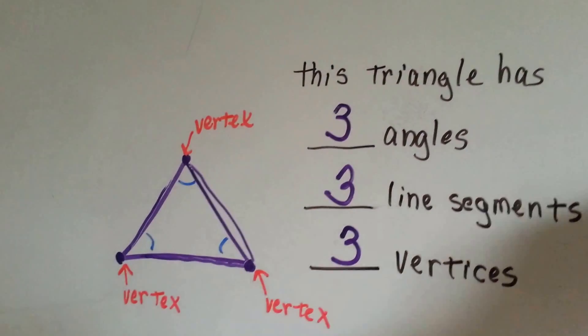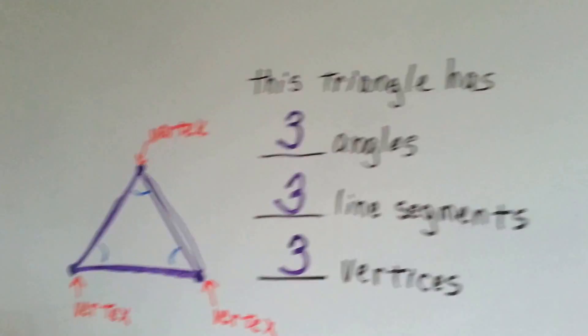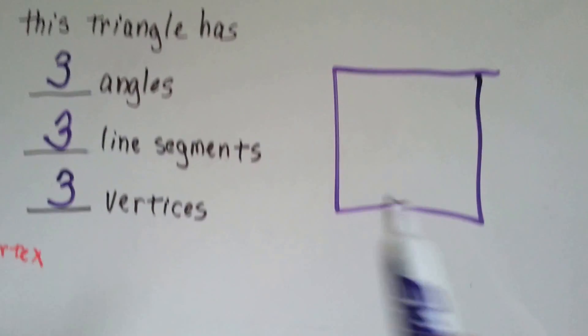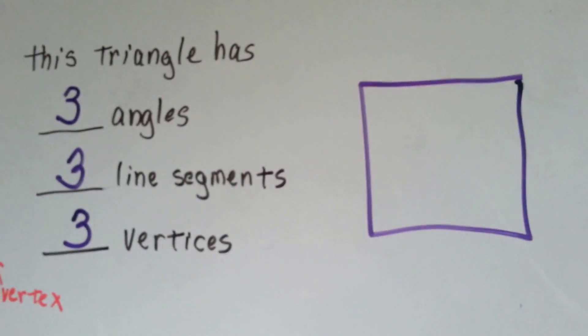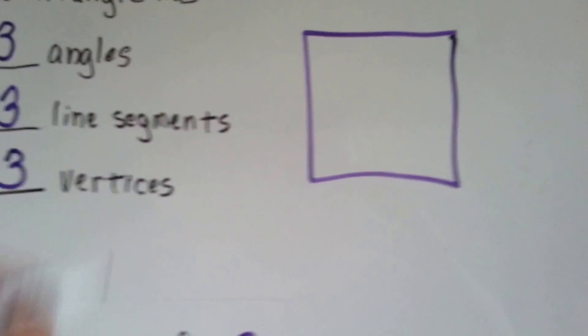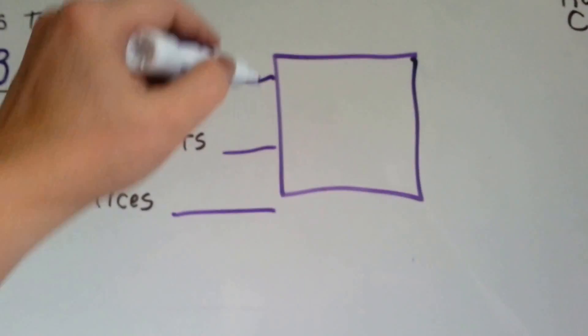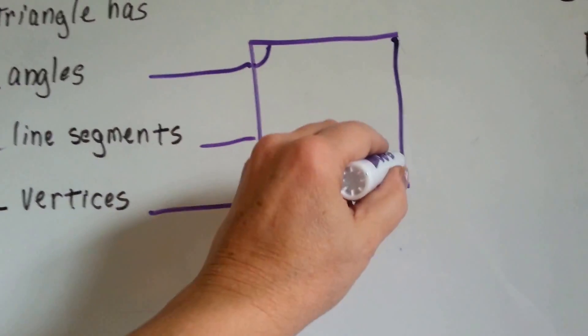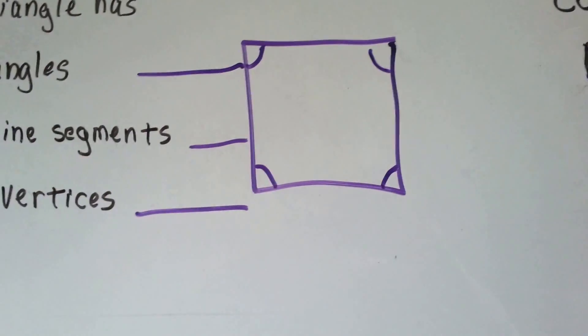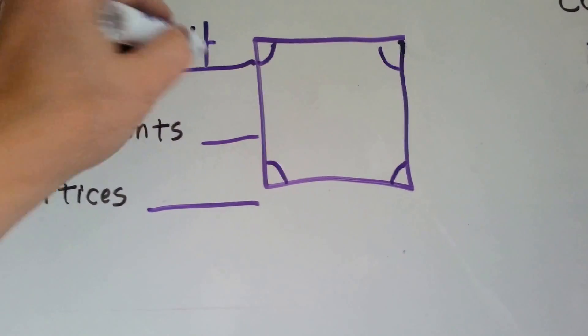What if we had a square? How many angles would be in the square? Okay, we've got an angle here, we've got an angle here, we've got an angle here, and we've got an angle there. So that's four angles.